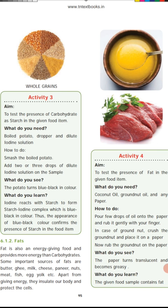Next one is fat. Fat is also an energy-giving food and gives more energy than carbohydrate. Some important fat sources are butter, ghee, milk, cheese, paneer, nuts, meat, fish, and egg yolk. These are all fat foods that give energy. Apart from giving energy, fats also insulate our body and protect the cells.